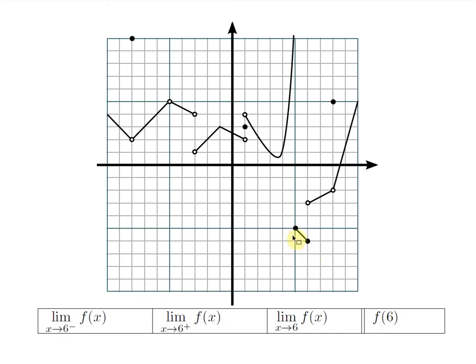At x equals 6, for the limit on the left, look at this part of the graph traveling toward the southeast and guess a y-value of negative 6. For the limit on the right, look at just a little bit to the right of x equals 6 and travel along here — guess a y-value of negative 3. Since these numbers don't match, the two-sided limit fails to exist. Finally, f of 6, the actual y-value, is negative 6.